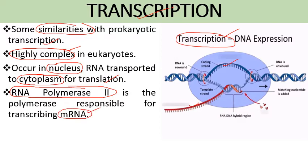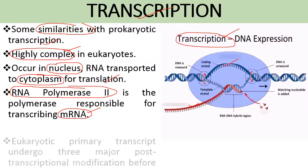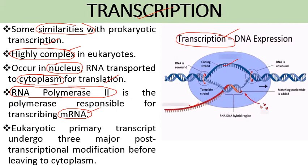There are three different types of RNA polymerases — RNA polymerase 1, RNA polymerase 2, and RNA polymerase 3 — which have different functions. The eukaryotic primary transcript undergoes three major post-transcriptional modifications before leaving to the cytoplasm. This mRNA is not functional as initially formed; it undergoes modifications known as RNA processing.